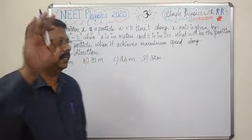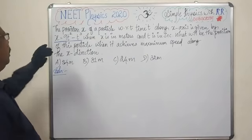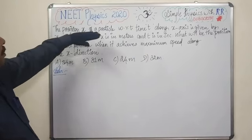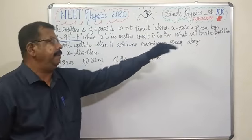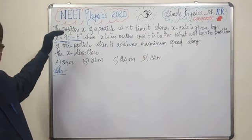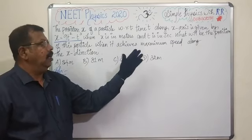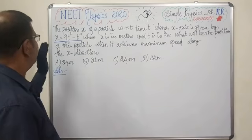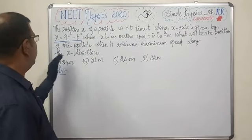Hi students, I have another problem. This NEET physics problem: The position x of a particle with respect to time t along x axis is given by x equals 9t squared minus t cubed, where x is in meters and t is in seconds. What will be the position of this particle when it achieves maximum speed along the x direction?